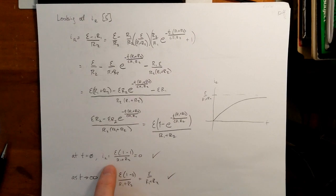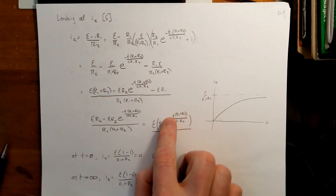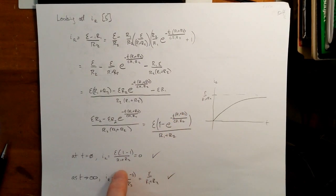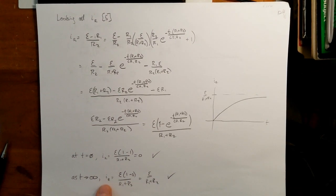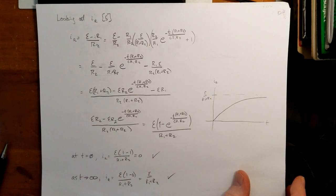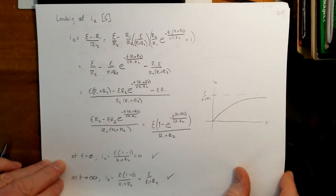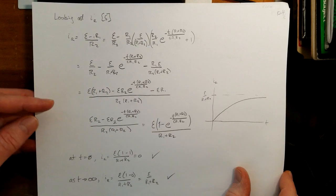At time is equal to zero, we get one minus one because this whole thing becomes one, and so we get zero, which is what we would expect, and at time is equal to infinity, the current approaches epsilon over R1 plus R2, which is what we got on the other page.